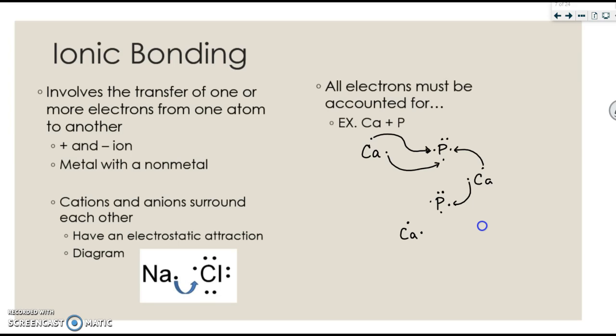Now this phosphorus has two available electrons, so it needs two more. So an additional calcium comes in to give up its electrons. In the end, when calcium and phosphorus combine, they form Ca3P2. We're going to talk about how to do that without drawing all of those diagrams.